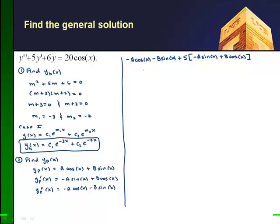And my yp prime, if I go down here, it becomes minus a sine x plus b cosine x. Then I have a plus 6y. I'm going to say plus 6 times my yp is a cosine x plus b sine x. That's just my original assumption for my particular solution. And that's going to equal to 20 times the cosine of x.